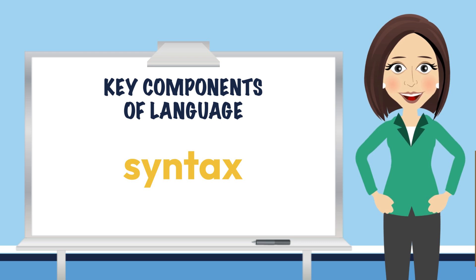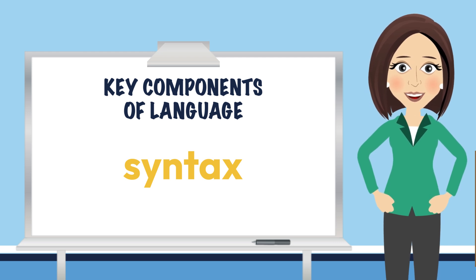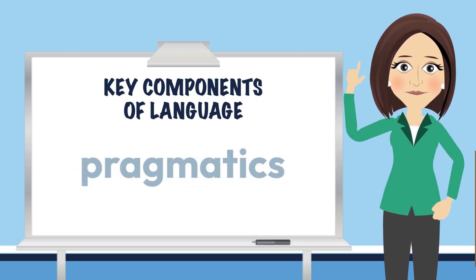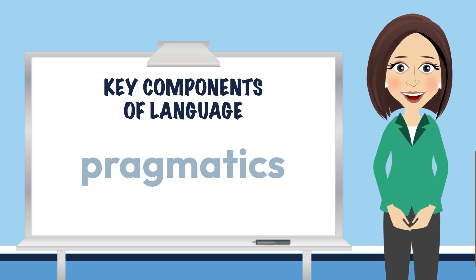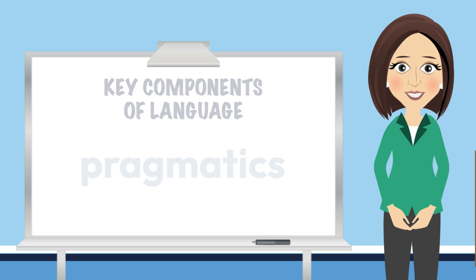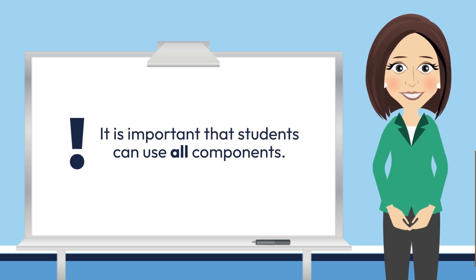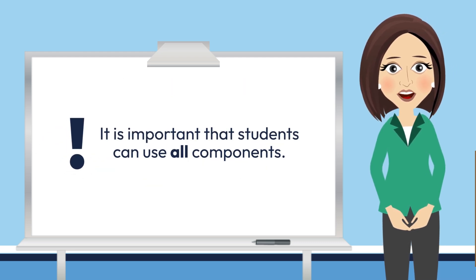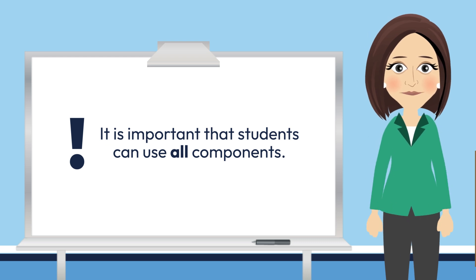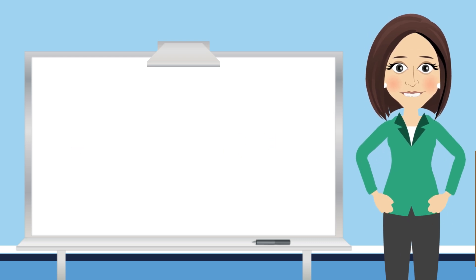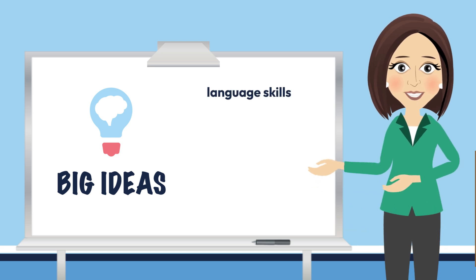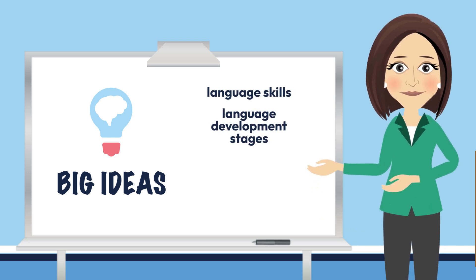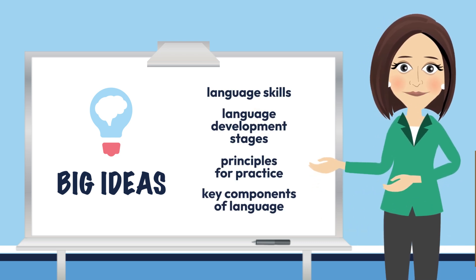Syntax also covers grammatical rules in oral language. Finally, the last component is pragmatics, which deals with the social rules of communication. Each of these components plays a role in communication, so it is important that students can use all components in order to be strong communicators regardless of the situation. This wraps up the review of the four big ideas we have covered so far: language skills, language development stages, principles for practice, and key components of language.